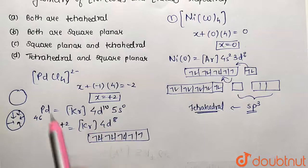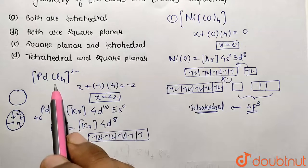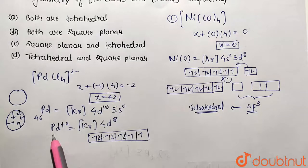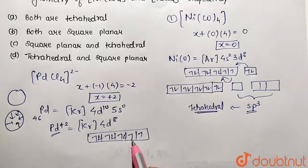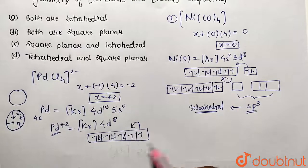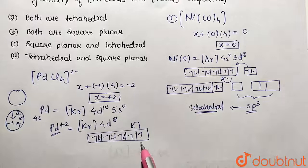Here, the ligand factor doesn't decide; the metal's effective nuclear charge is the deciding factor. The electrons will pair up to form a stabilized square planar complex.